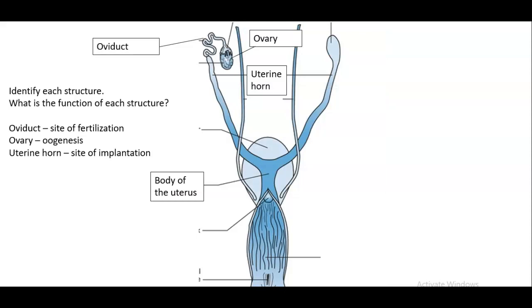Then here we have the female reproductive tract. We have the oviduct, the ovary, the uterine horn, and the body of the uterus. So the oviduct is the site of fertilization. The ovary is where the egg is produced. So oogenesis occurs.